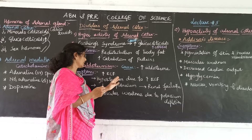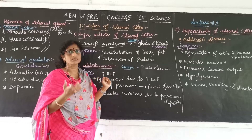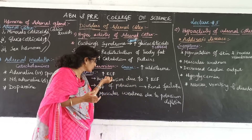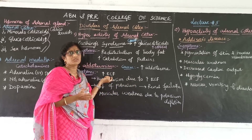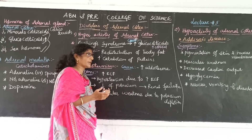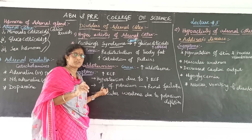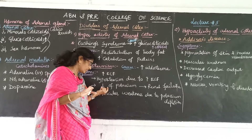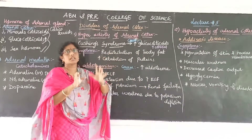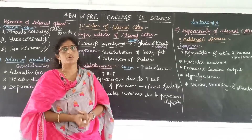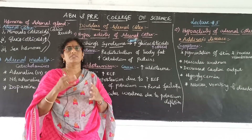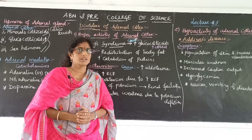In hyperaldosteronism, potassium ion levels are elevated but this can also lead to depletion. If there are low amounts of potassium ions, there will be a depletion of potassium in the blood, which leads to renal failure. If potassium depletion is severe and untreated, death can also result.